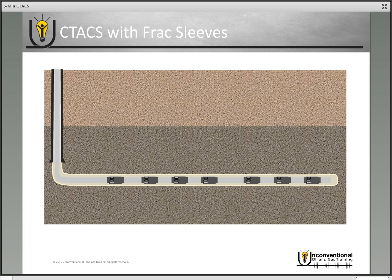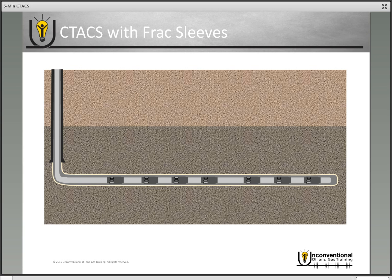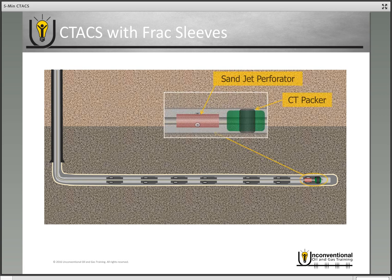The other alternative is using frack sleeves. We've got our horizontal well drawn in the diagram here. We've already got our casing in and we've got our frack sleeves spaced out on the casing. Once you've got that installed, pump cement around the sleeves to provide isolation, and once the cement is set up you move your drilling rig off of location. When you're ready to perform the frack job, you run coil tubing into the wellbore with the same exact bottom hole assembly — the sandjet perforator and a coil tubing packer.